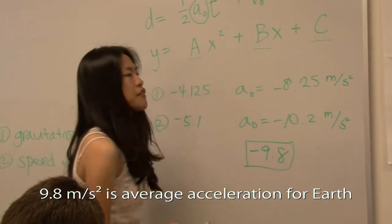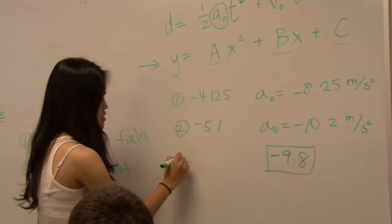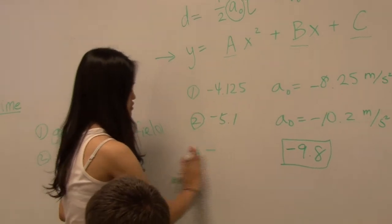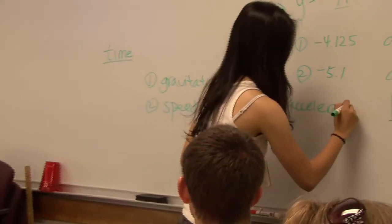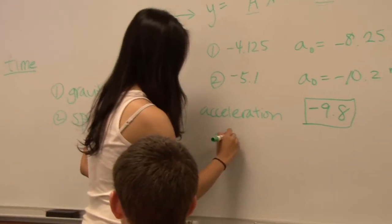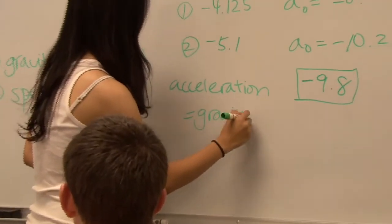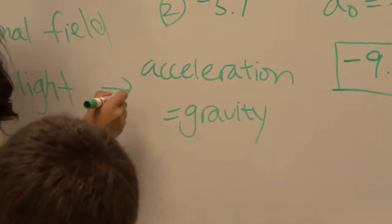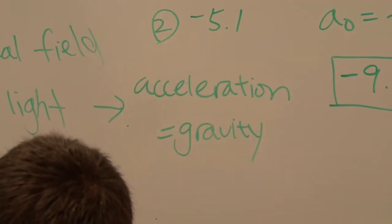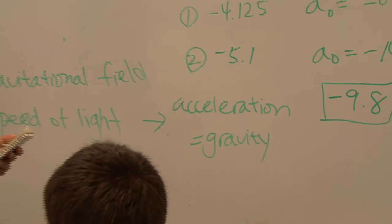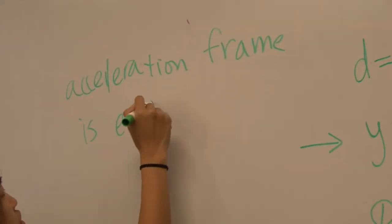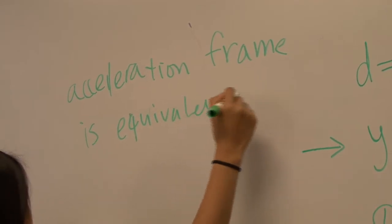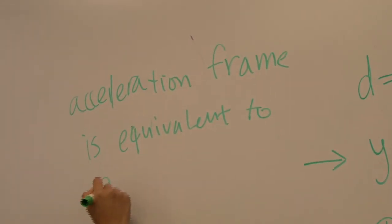But from this, you can see that now the acceleration equals gravity. This is really important. So this means that since acceleration equals gravity, acceleration frame is equivalent to the gravitational field.